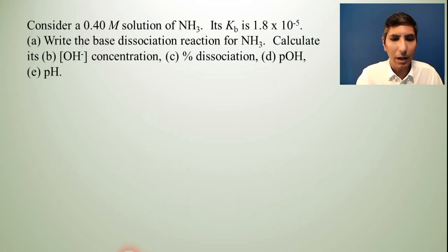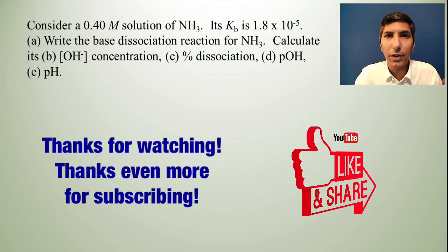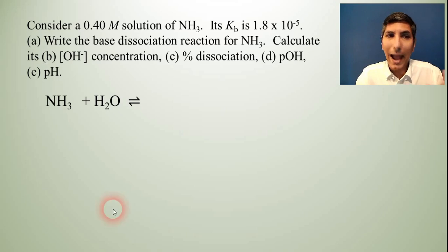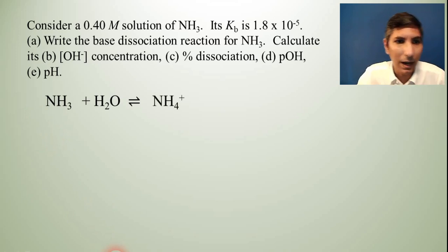We're going to start by working a couple of weak base problems. You'll find that most of these are done almost exactly like weak acid problems with a little twist at the end. So in this problem it says consider a 0.40 M solution of NH3. Its Kb is 1.8 × 10^-5. Write the base dissociation reaction for NH3. So first thing we have to do is write that equation. So there's the formula for ammonia and it's of course added to water. And in a base dissociation the products will be the conjugate acid of that base and hydroxide. So the conjugate acid of this ammonia is just add on NH+. So add on NH+ to NH3 it becomes NH4+, the ammonium ion. And of course there's our hydroxide. So that's part A.